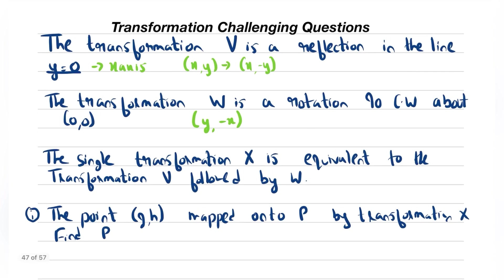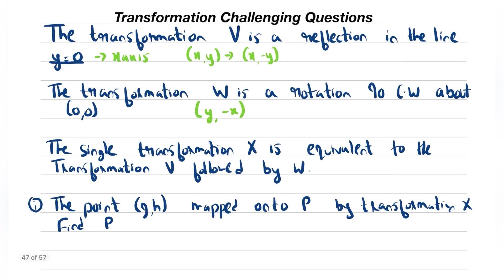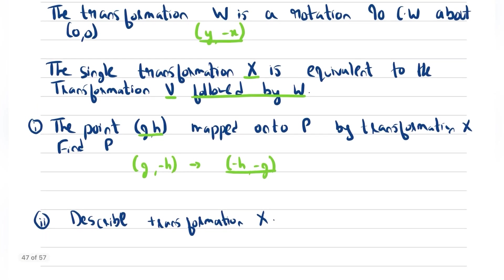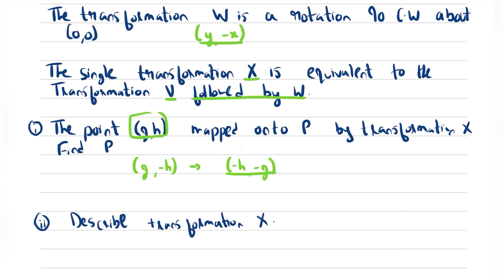Now let's solve this. The single transformation X is equivalent to transformation V followed by W. First it's V, which means x-axis reflection, so g,h becomes g,-h. Then it is followed by W, which means y comes to the x position and the sign of g changes.